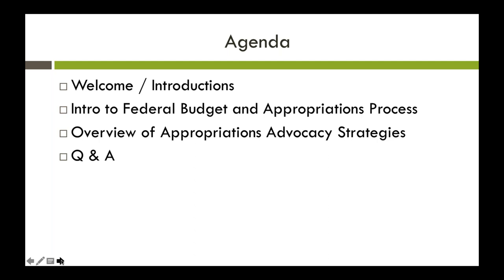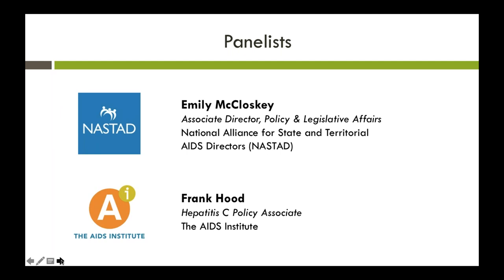The purpose of today's webinar is to provide an introduction to the federal budget and appropriations process, an overview of appropriations advocacy strategies, and updates on coalition-based efforts to advocate for increased funding and support for viral hepatitis prevention programs in the United States. It's so important in this effort to have more and more community advocates engaged in speaking out about the severe lack of funding and resources available for working towards the elimination of hepatitis B and C.